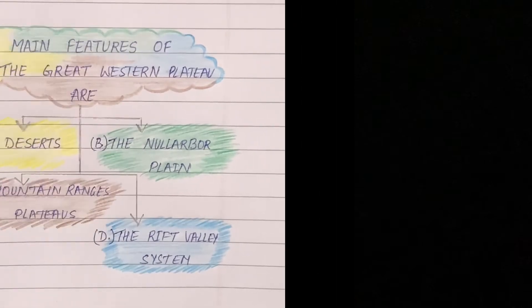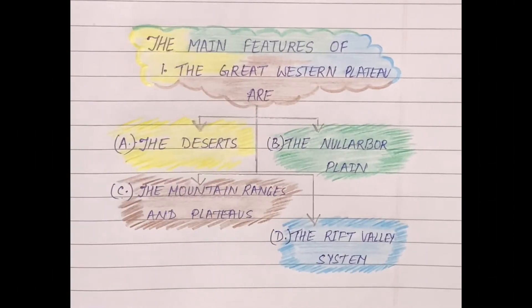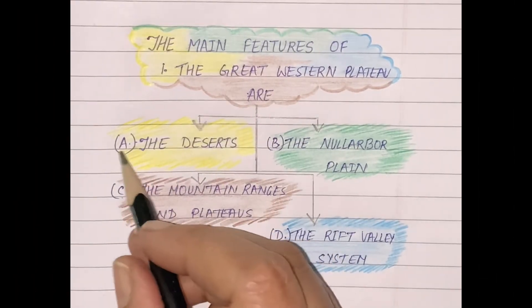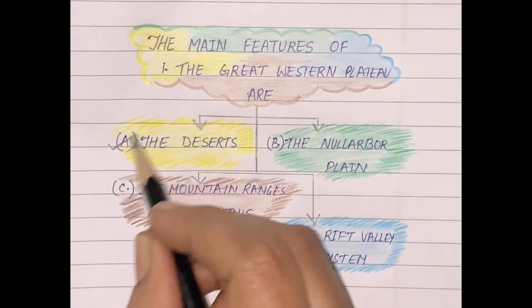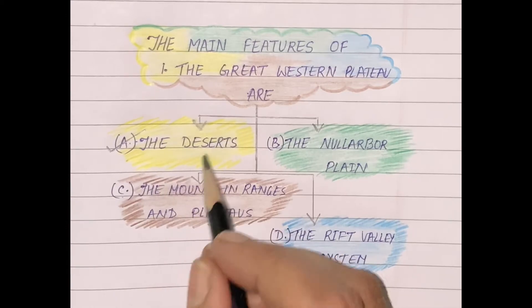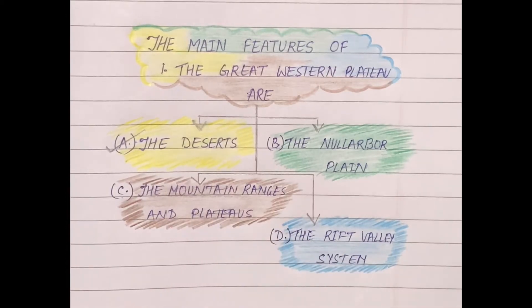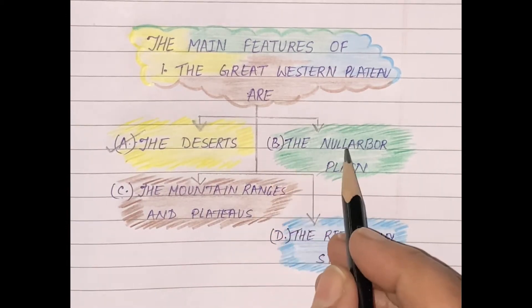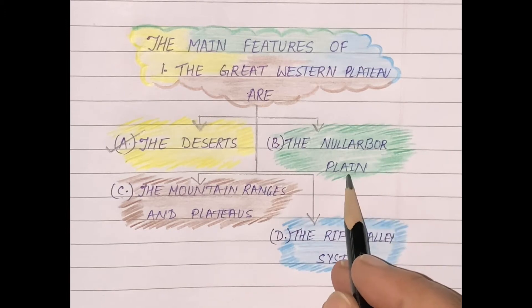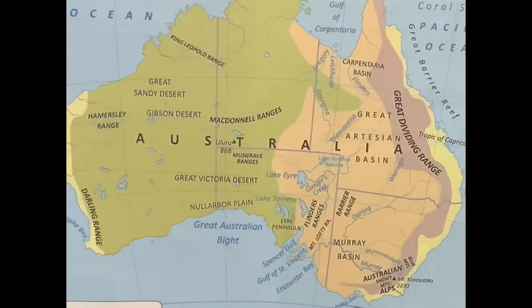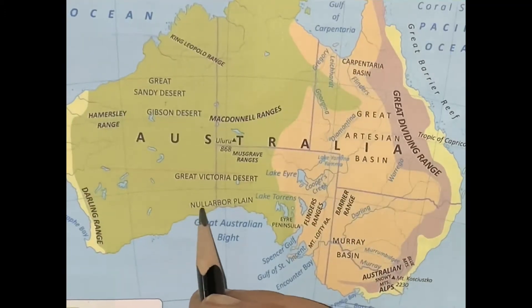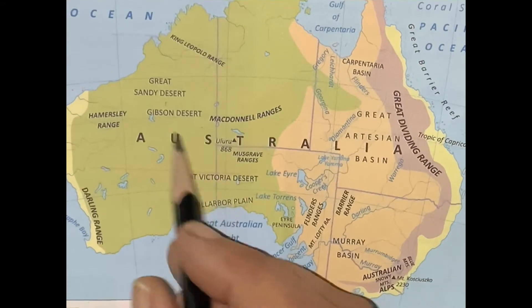Welcome back students. In this video, Australia part 3, in my last video we covered feature A, the deserts. Here we will explore feature B, that is the Nullarbor Plain.